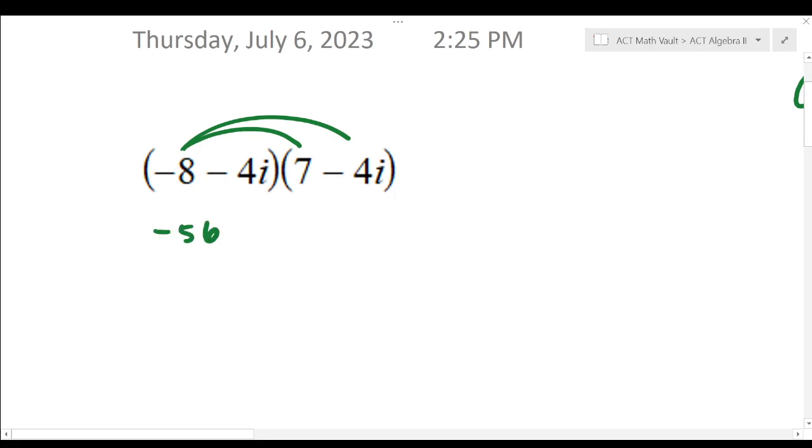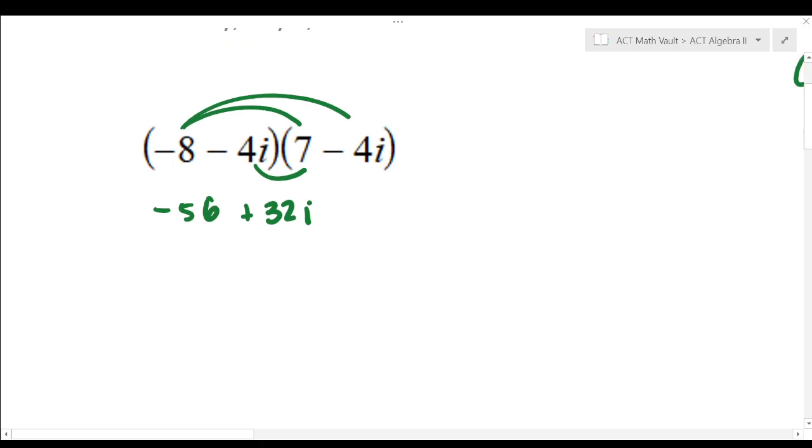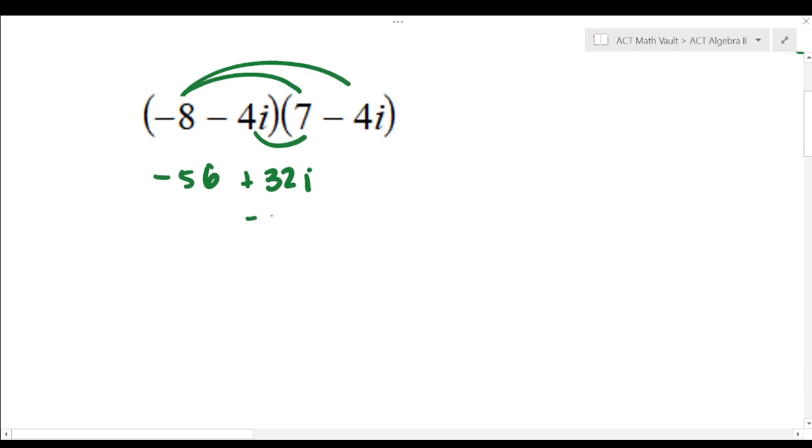So negative 56, and then plus 32i. Then foil would tell you to throw this in the mix too. So negative 28i. And these two would be 16i squared, we can't forget that squared.